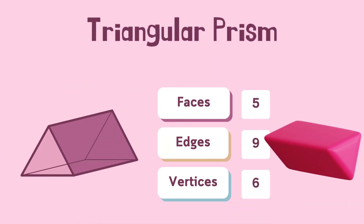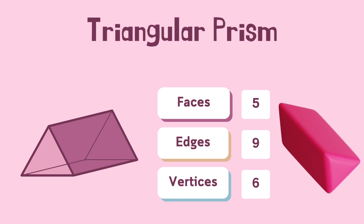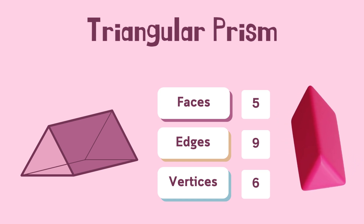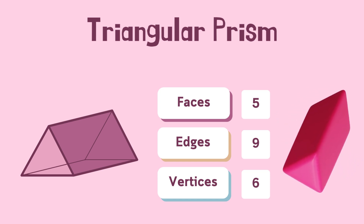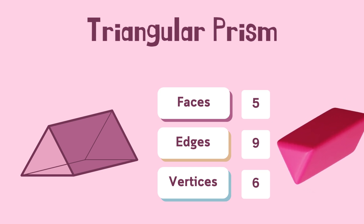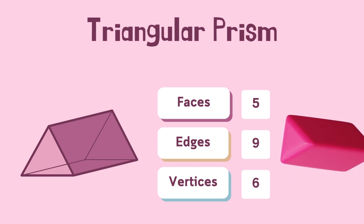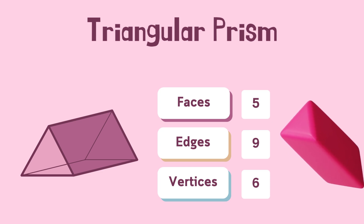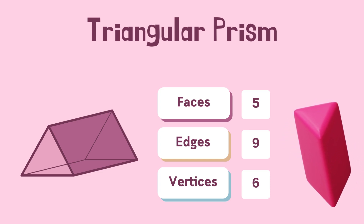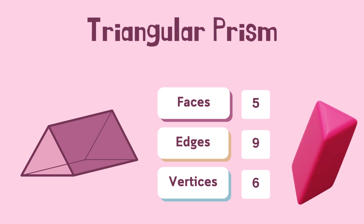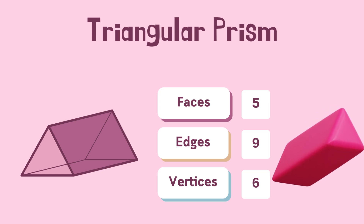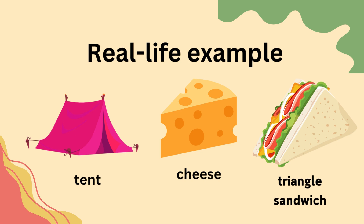Hi, friends. I'm a triangular prism. I have five faces — two triangles and three rectangles. I have nine edges — those are the lines where my faces meet. And I have six vertices, that means six corners. I look like a tent, a wedge of cheese, or even a triangle sandwich. I'm fun, pointy, and strong like a bridge beam.